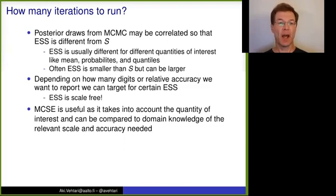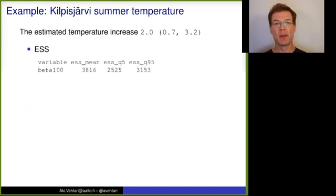And then that additional information can help us also to decide whether we would need to run more iterations than we already did and spend more computation time. OK, if we look at then this Kilpisjärvi example again, so we estimated temperature increase 2.0, 95 percentage interval from 0.7 to 3.2. Do we have enough iterations to report with this accuracy?